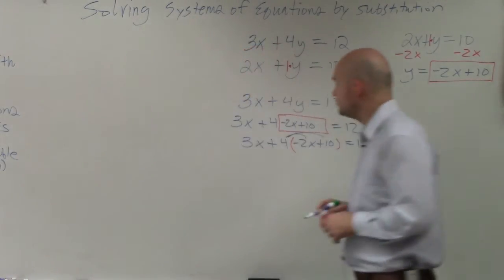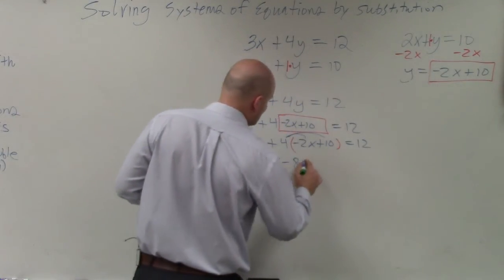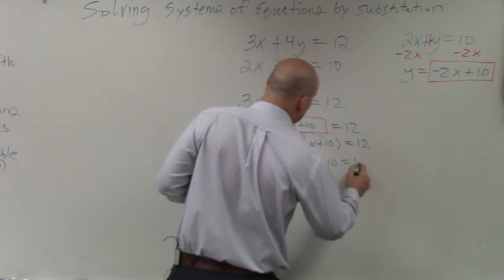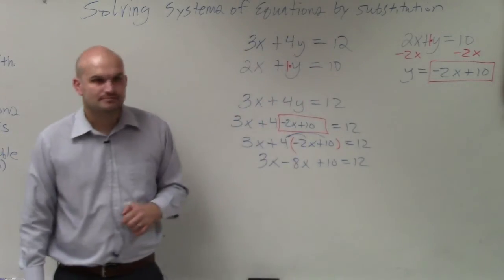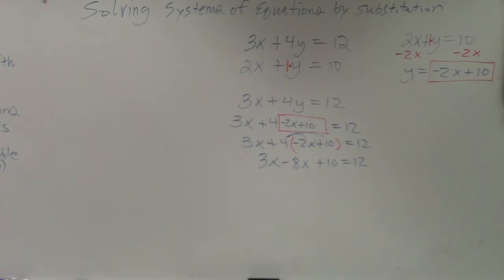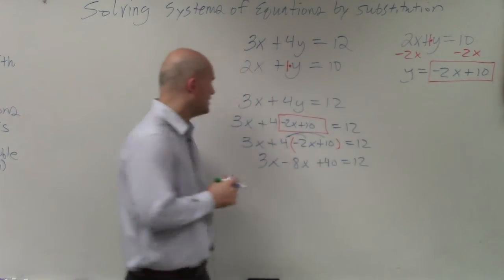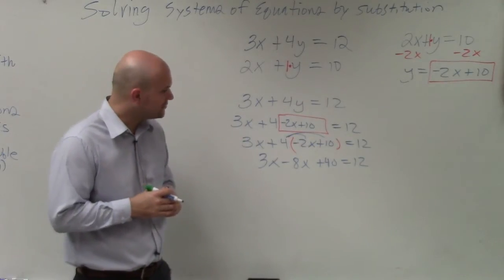I need to apply a distributed property. So what I have is 3x minus 8x plus 10 equals 12. Let's see. Why didn't you multiply 4 by 10? Multiply 4 by 10? I should have. Thank you. 40. My mistake. I did not follow my rules correctly.